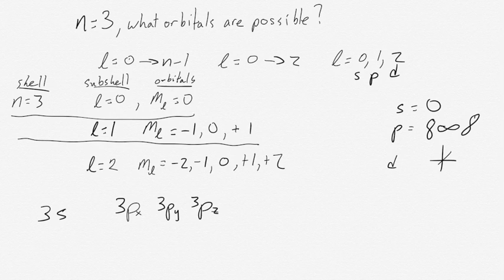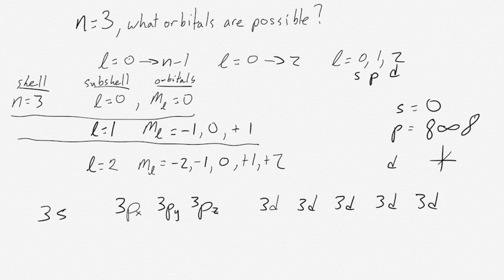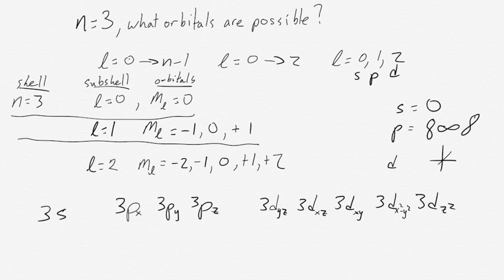By a similar method, we work out the designations for our l equals 2 subshell orbitals — all five of our d-type orbitals. We have five different orbitals within the d subshell, which doesn't correspond to a simple three-dimensional axis system. You don't need to know them off by heart, but the designations are: 3d-yz, 3d-xz, 3d-xy, 3d-(x²-y²), and 3d-z².